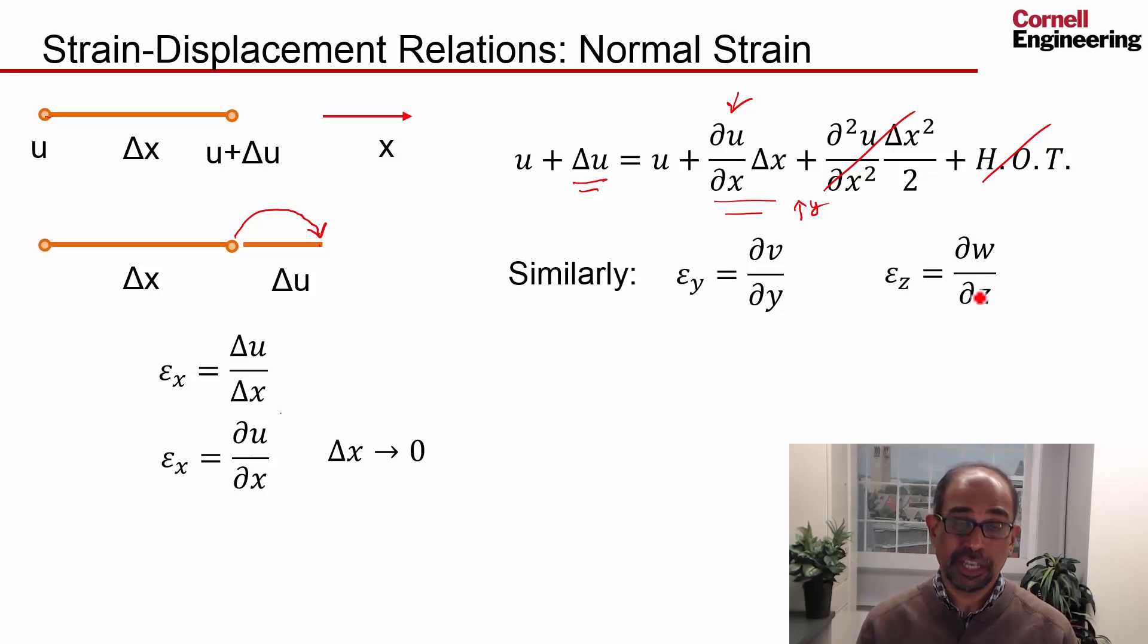We get three equations that relate the normal strains to the displacements. So I have one, two, three, but I also have three new unknowns - the displacements u, v, and w. To fully close the equation set, we need to bring in the strain-displacement relations for the shear strains.